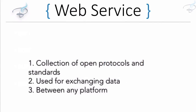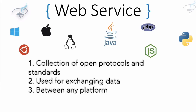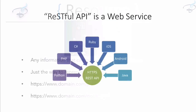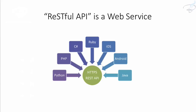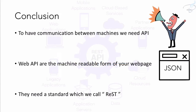REST is not a web service. A web service is a collection of open protocols and standards used for exchanging data between machines running on any kind of operating system or language. An API created in a REST way is a web service, because web services are designed to exchange data between any two kinds of machines. The conclusion: to have communication between machines, we need APIs. Web APIs are machine-readable forms of your webpage. Some websites consume their own API, and they need a standard which we call REST. If you like this episode, please give it a thumbs up, share with others, and don't forget to subscribe and follow on Facebook, Twitter, and Instagram.